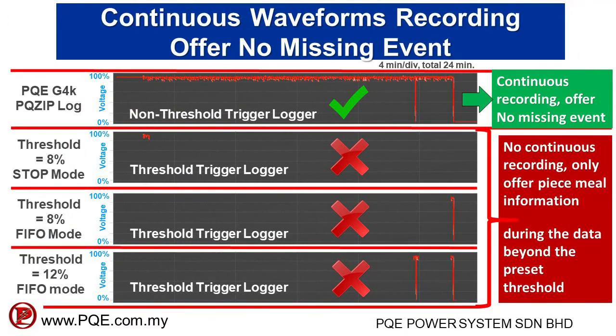For voltage dip measurement, we emphasize the importance of having continuous voltage and current waveform recording based on a non-threshold trigger method. A power quality analyzer with continuous waveform recording mode will be able to capture any event in your network. Analyzers that adopt a threshold trigger mode are not suitable for standard power quality voltage dip monitoring, as they will not continuously capture three-phase voltage waveforms and therefore cannot help you maintain a stable and reliable power system.